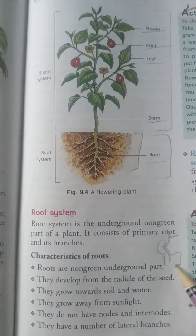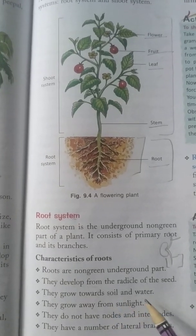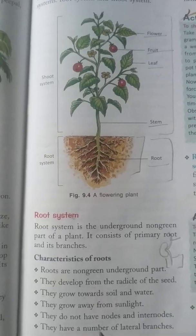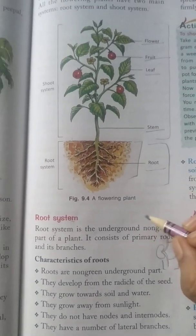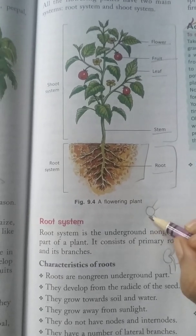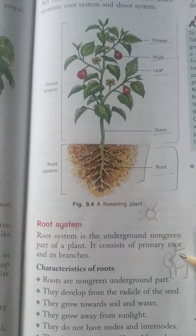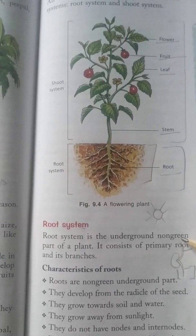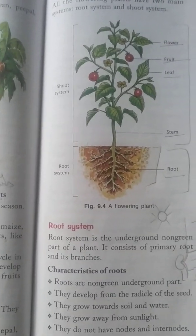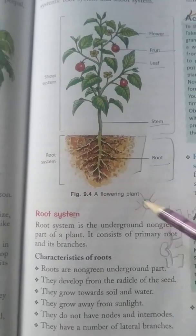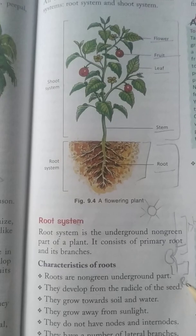The radicle always grows towards the ground and helps in absorption of water and minerals from the soil. Roots grow towards soil and water, and one more feature is that they always grow away from the Sun. The plumule part of the seed always grows towards the Sun and forms the shoot of the plant, while the radicle always grows away from the Sun, towards the ground, forming the root system.